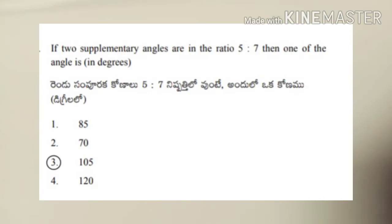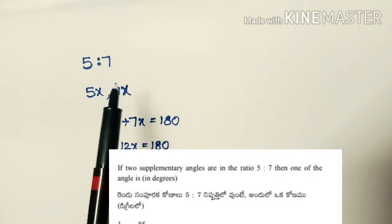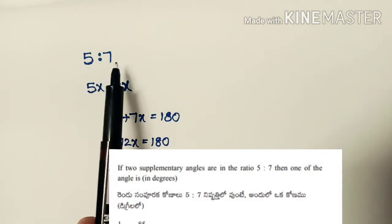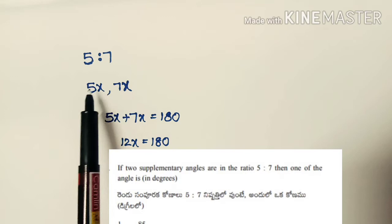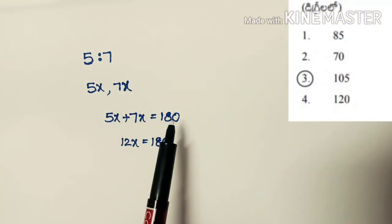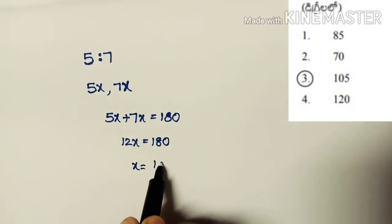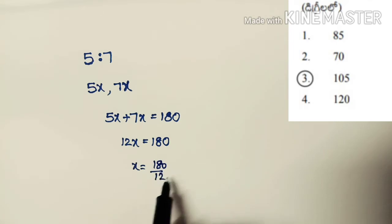Next problem: if two supplementary angles are in the ratio 5 to 7, then one of the angles is — options are 85, 70, 105, 120. Given ratio 5:7, angles are taken as 5x and 7x. Since they are supplementary: 5x + 7x = 180, so 12x = 180, giving x = 15.